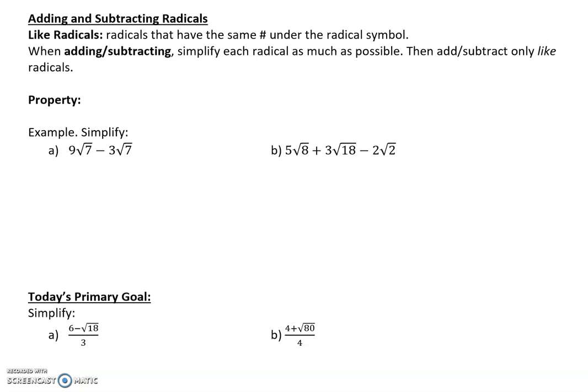then we add or subtract only like radicals. Let's look at this first one: 9√7 minus 3√7. They have the same radical, so I can subtract the coefficient. Just think about this - if I gave you 9x minus 3x, you would say that's 6x.